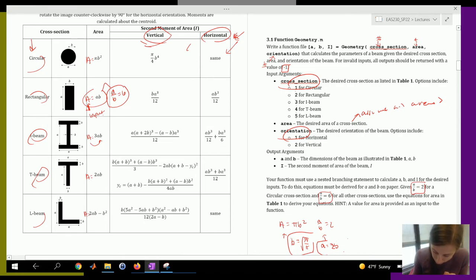But all the other ones, if they are invalid, go ahead and return negative one for A, negative one for B, and negative one for I.